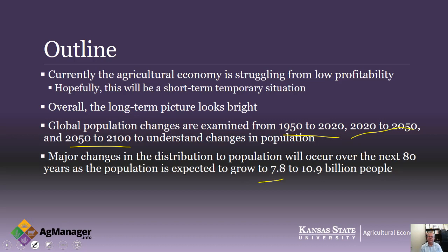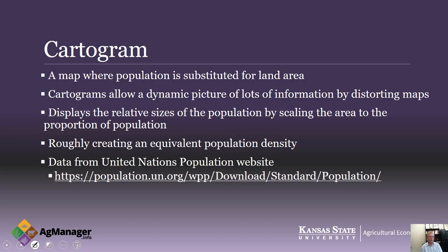Population currently is estimated to be about 7.8 billion individuals, and by 2100 we're looking at having 10.9 billion people on the planet. The way we're going to look at this is through a cartogram — a map where population is substituted for land area. Cartograms allow for a dynamic picture by distorting maps, displaying the relative sizes of population by scaling the area to the proportion of the population. Roughly, we're creating an equivalent population density and looking at how that would distort the maps to give a good picture of where population is changing globally over time.